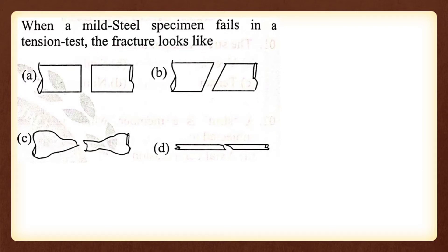When a mild steel specimen fails in a tension test, the fracture looks like a cup-cone shape — option C is the correct answer. Brittle materials fail differently; mild steel shows cup-cone behavior.